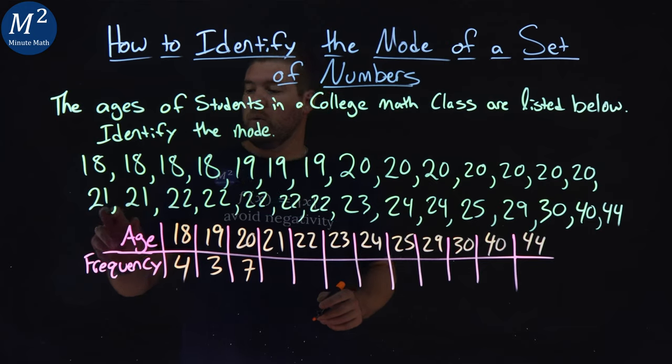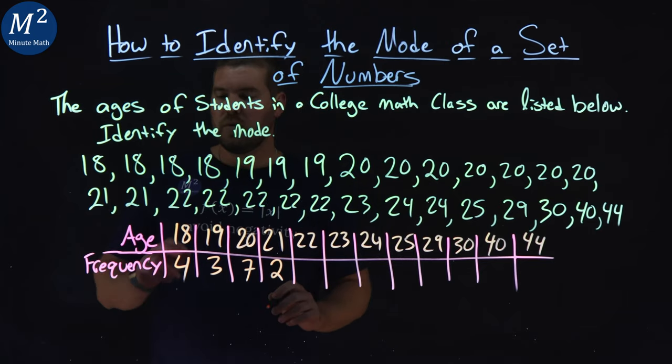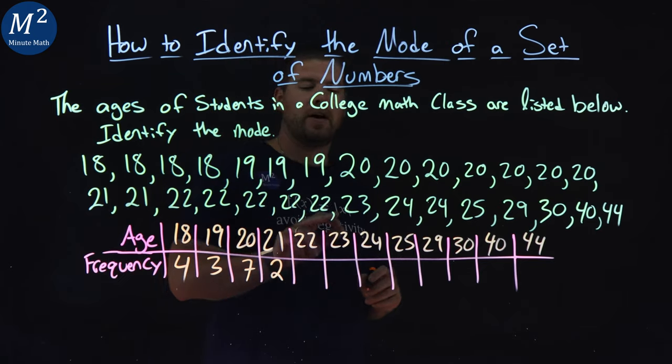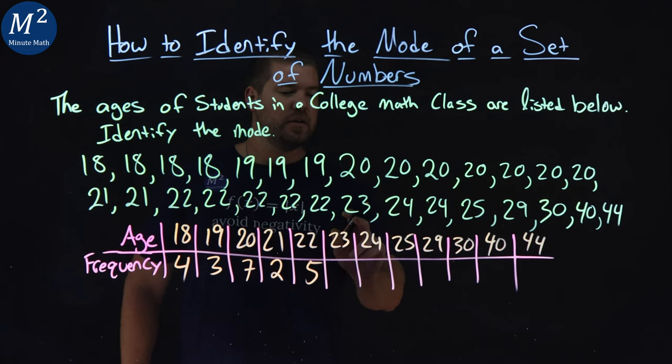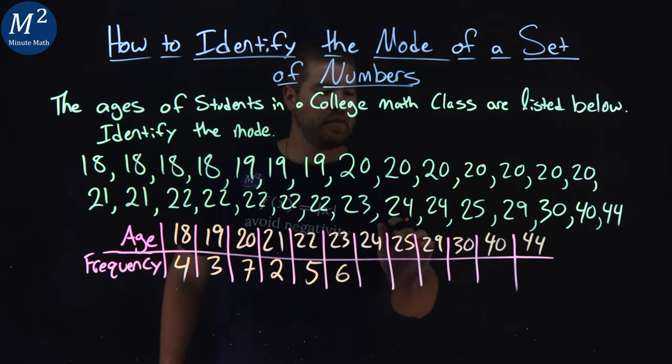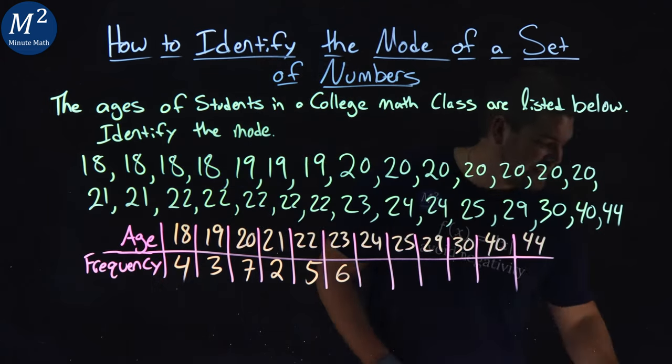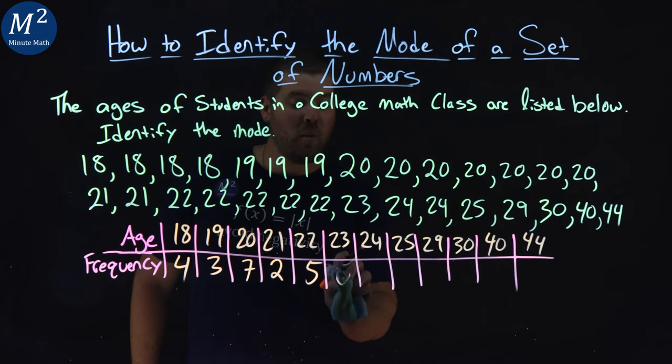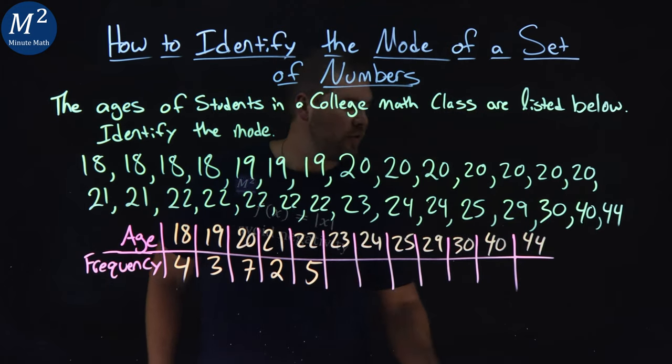21: 1, 2. 22: 1, 2, 3, 4, 5 right there. 23 is a 6. Twenty, sorry, not 6. See, easy to make mistakes. 23 would be a 1 single. See, you've got to be careful there.